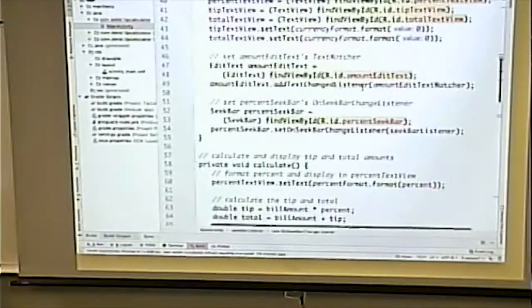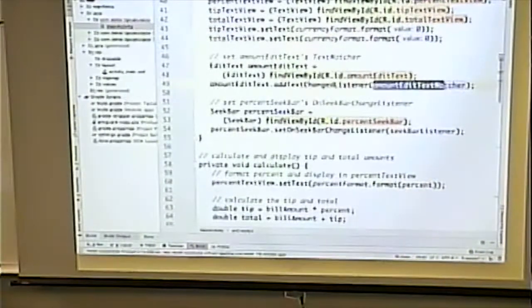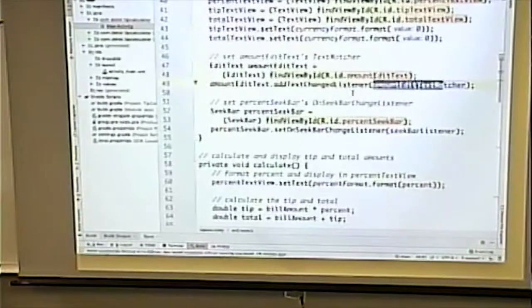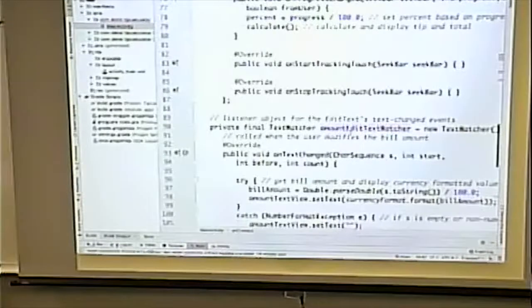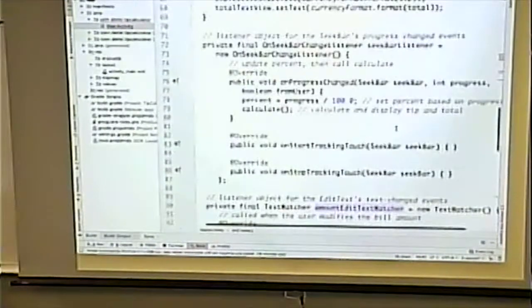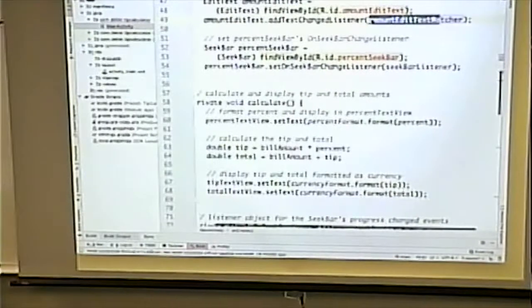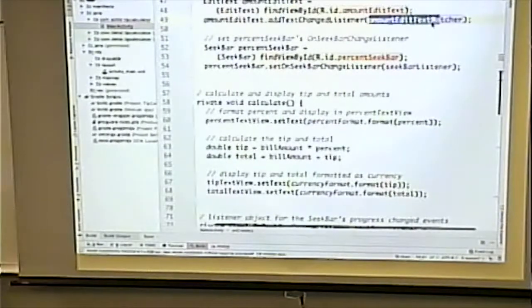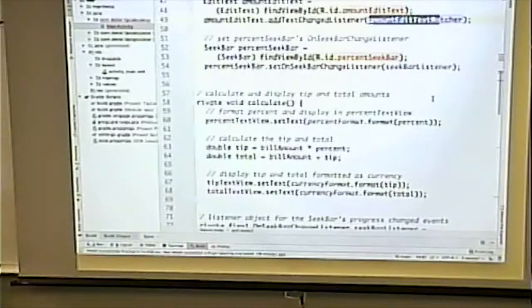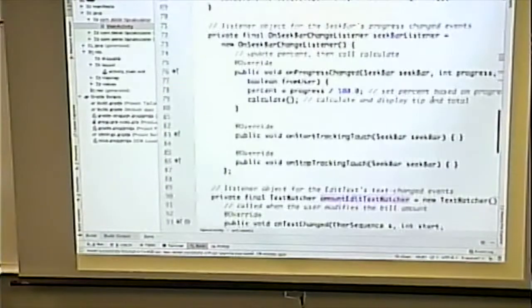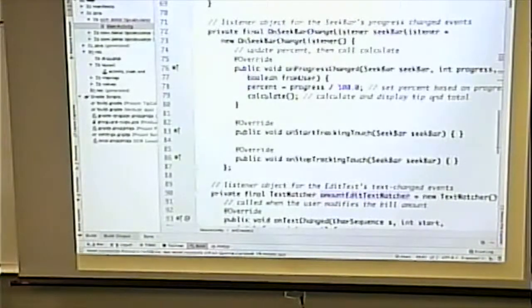Now those because they are of the proper type. We can use those to set the listeners. So amount to edit text watcher. That's a text watcher listener. So we can set that to the listener of that edit text field. Same thing with the seek bar listener.